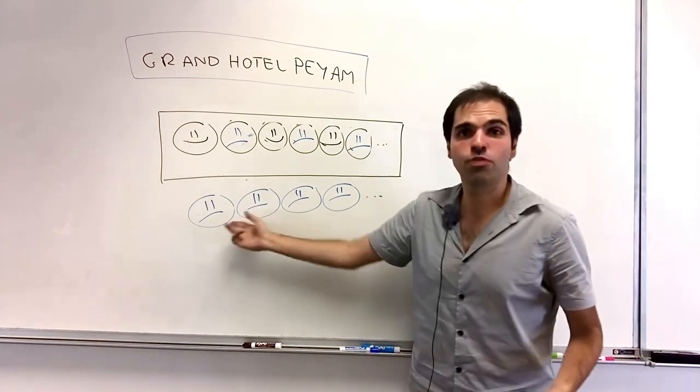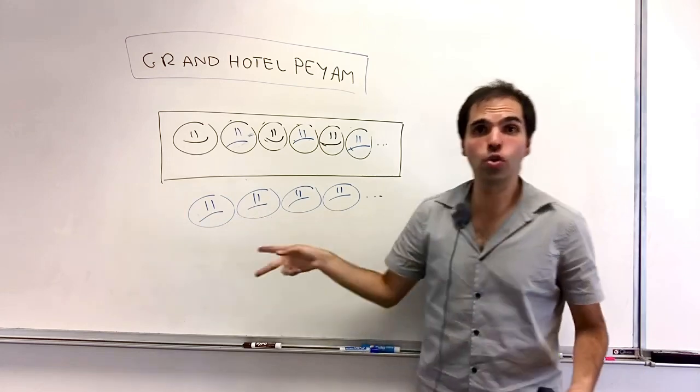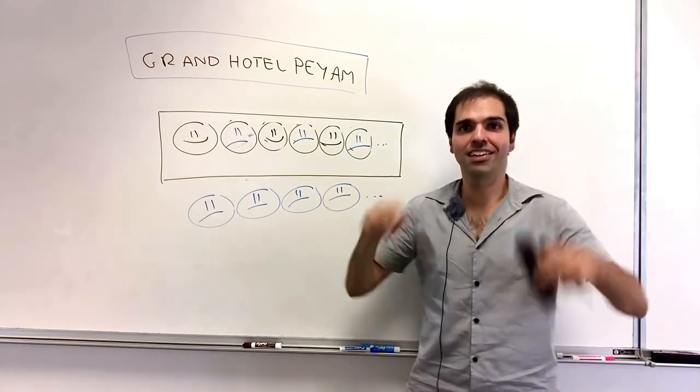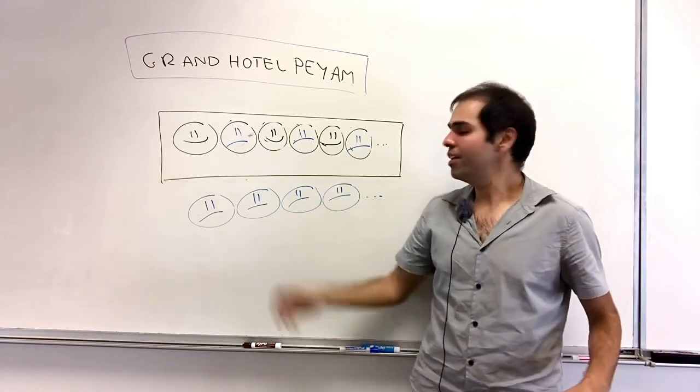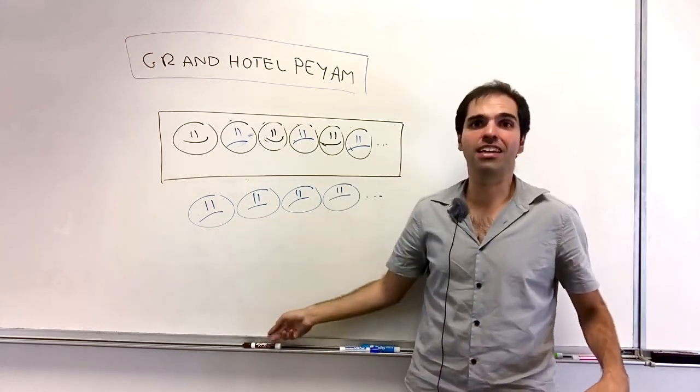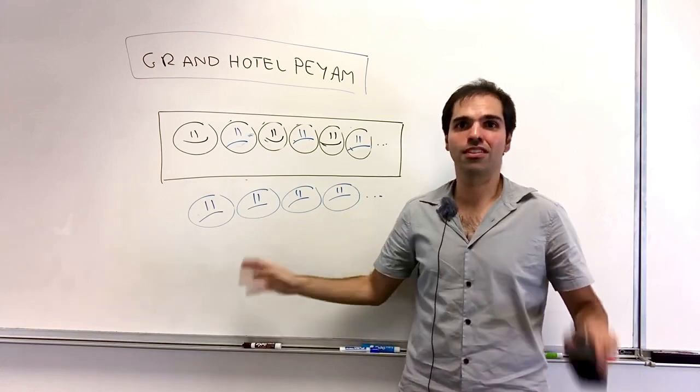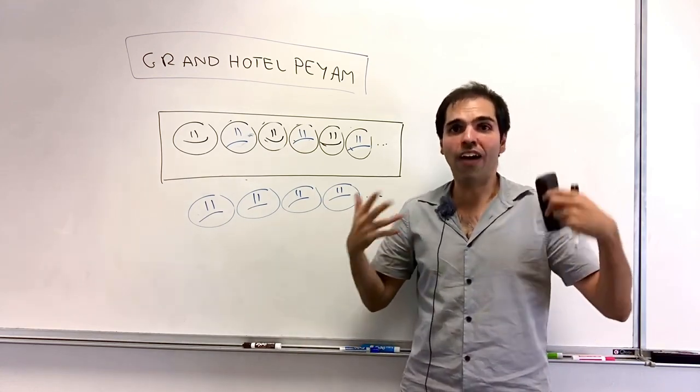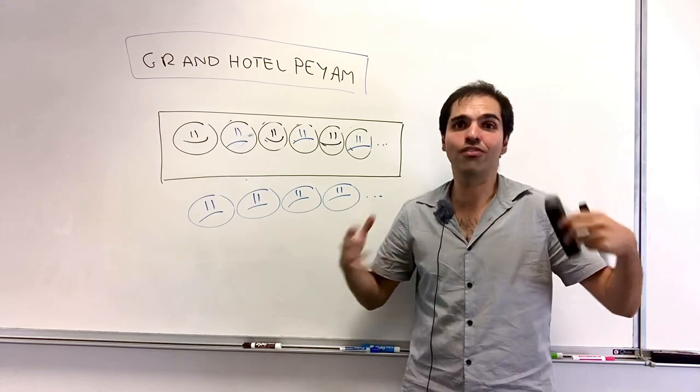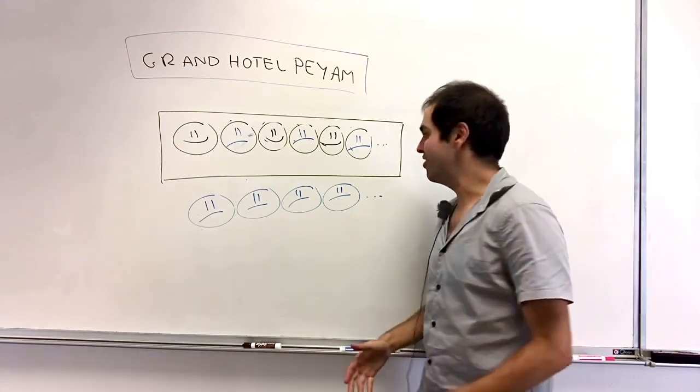And by the way, nothing special about one bus. You could do it for two buses, just by putting everyone in every third room. And in fact, for finite many buses, that also works, which also shows that the union of finitely many countable infinite sets is still countably infinite.